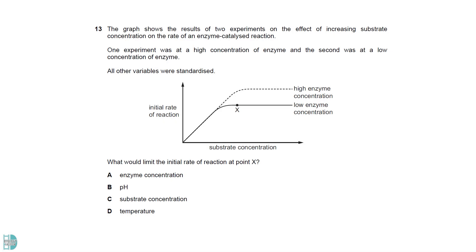If you compare point X of the two graphs, you can notice that the rate increases if the enzyme concentration is higher. This means that the enzyme concentration is the factor that controls the rate of reaction at the moment.